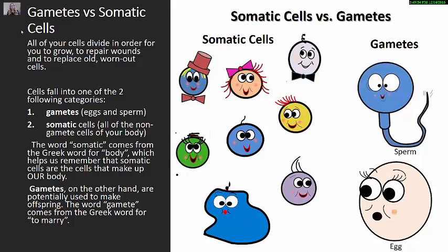Everything that is not a gamete is considered a body cell, otherwise known as a somatic cell. The word somatic actually comes from the Greek word for body, so that makes sense. Gametes, on the other hand, comes from the Greek word for 'to marry' — which makes sense because when you join the egg and sperm together you are able to get a whole new organism.